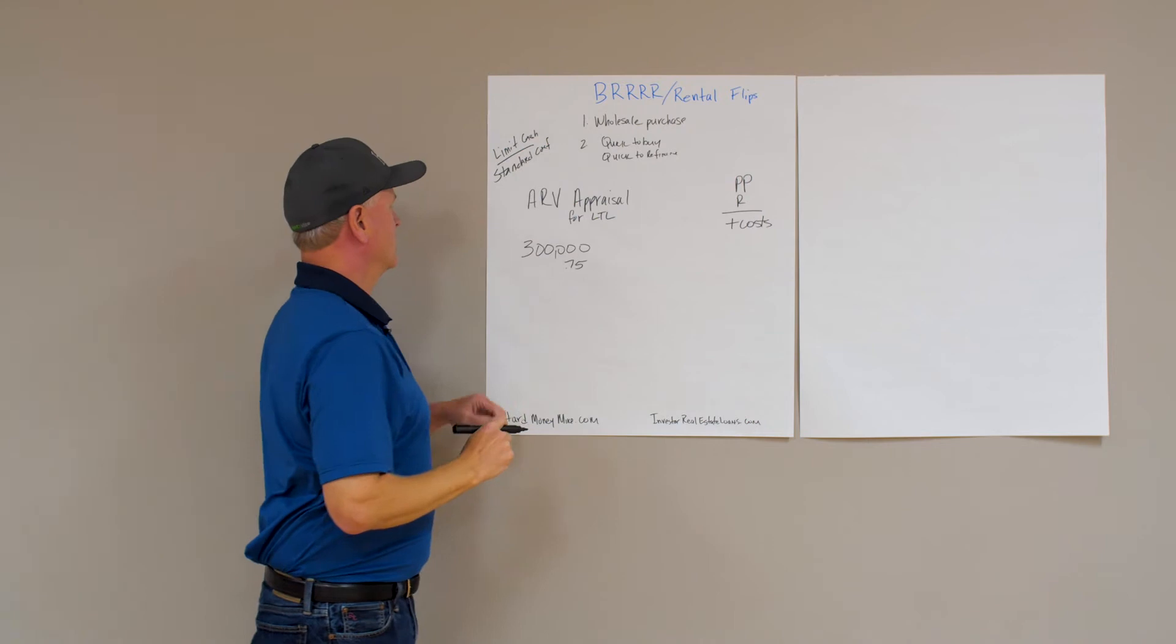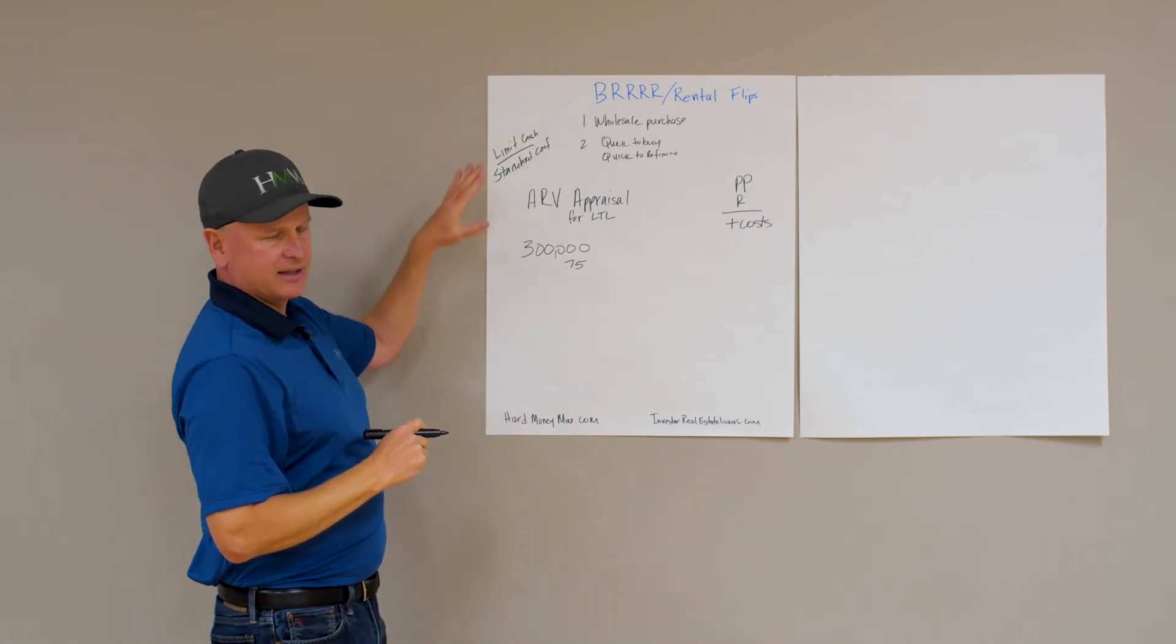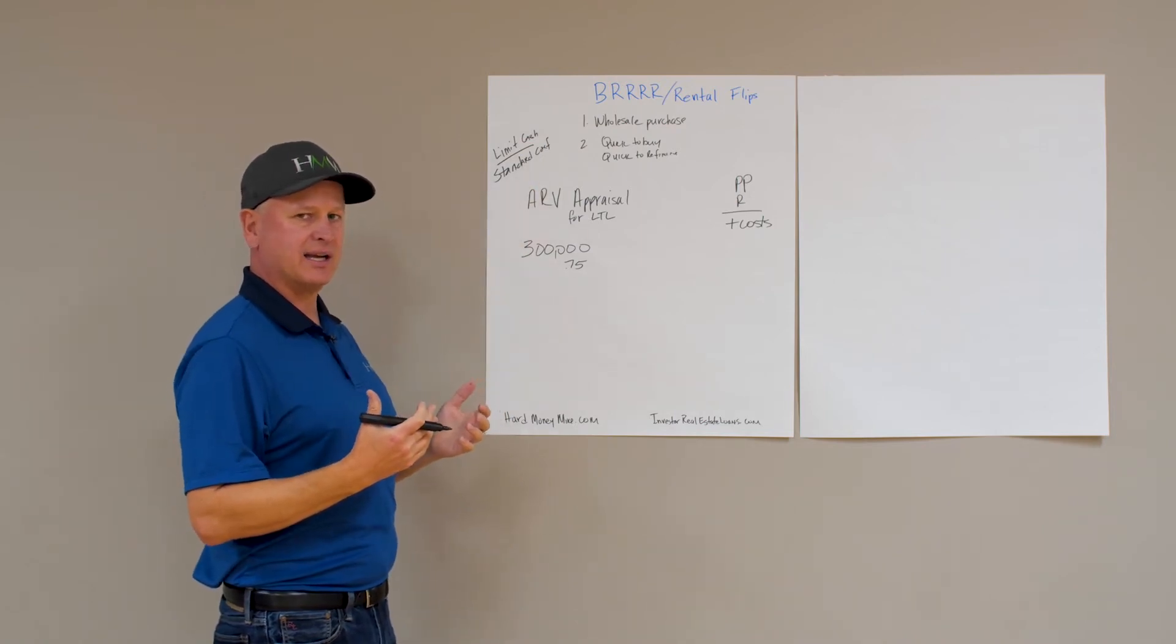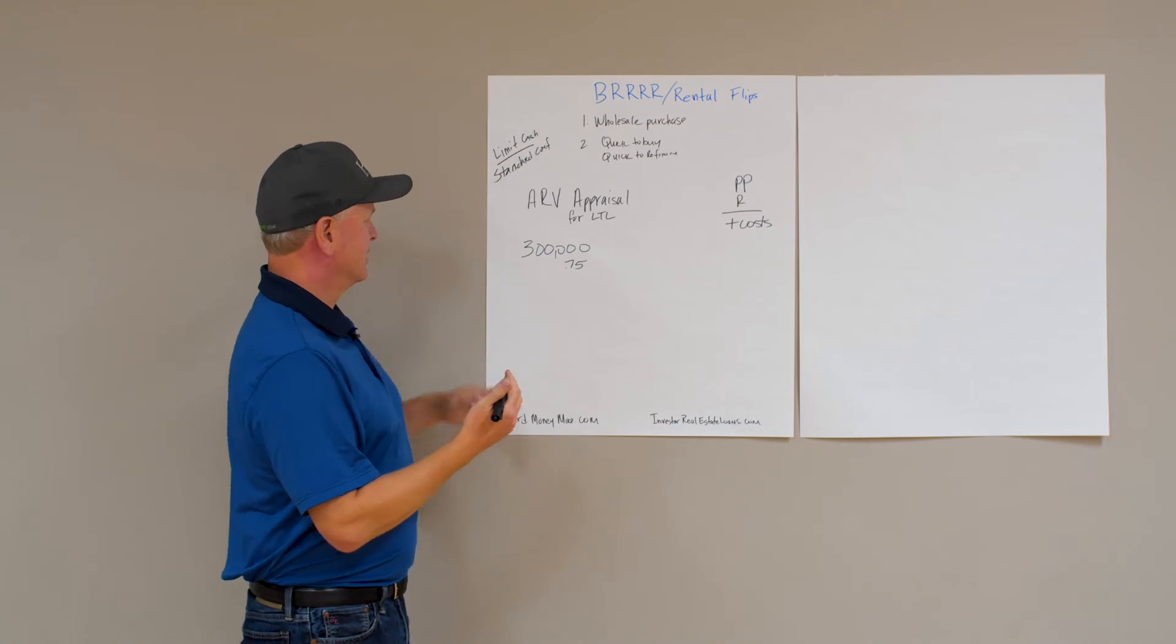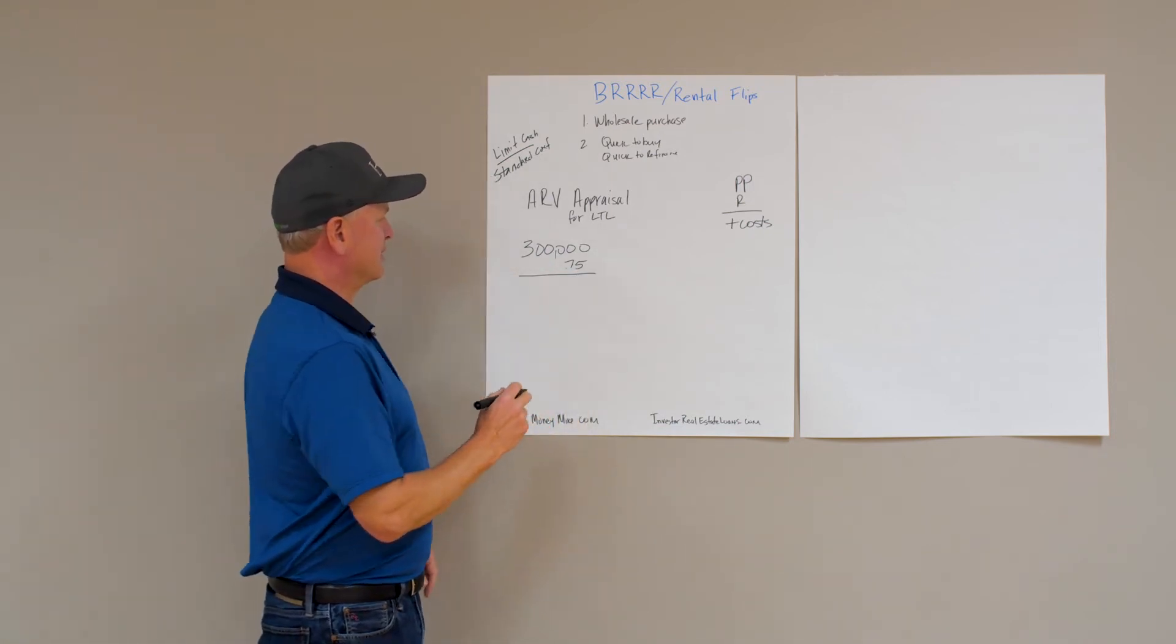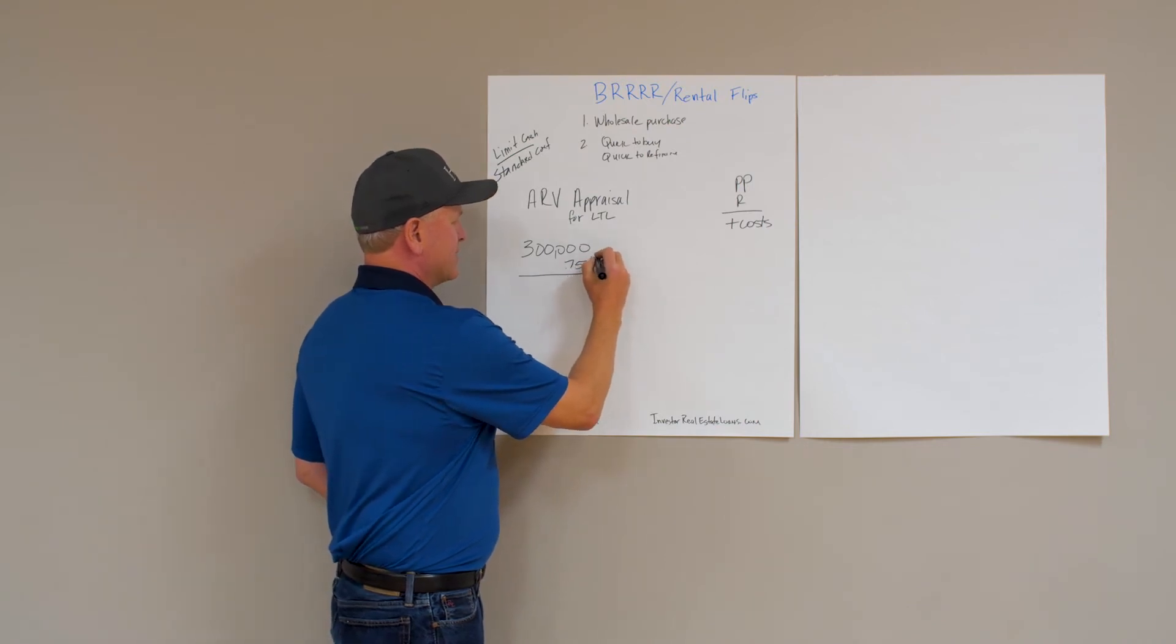Fannie, Freddie, whatever you want to call it. There's a lot of different loans out there, but just for this example, we're going to use a standard conforming loan because it is the number one product out there and what most people are using.